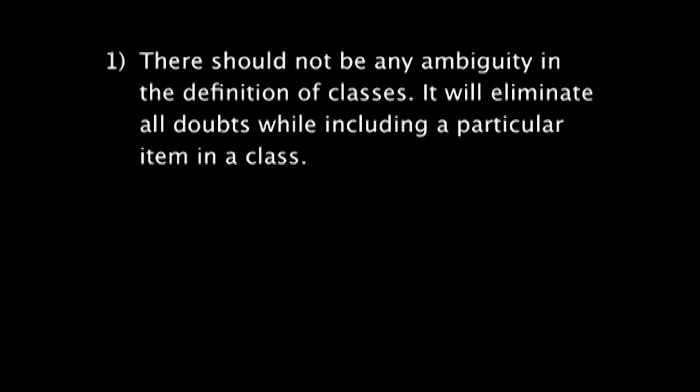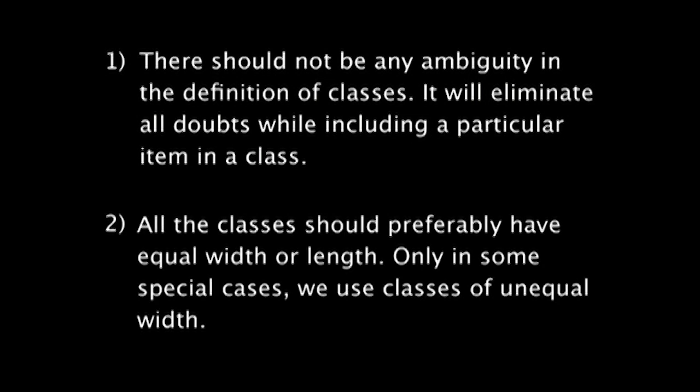Rules of classification: in quantitative data classification, classifying data by assigning arbitrary limits is called class limits. The group between any two class limits is termed as a class or class interval. The primary rules of classification are: there should not be any ambiguity in the definition of classes, which will eliminate all doubts while including a particular item in a class. All the classes should preferably have equal width or length.